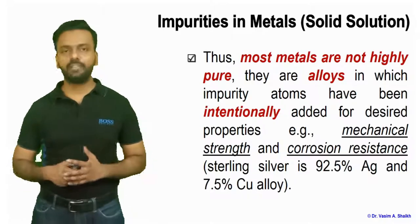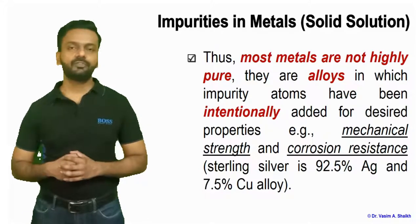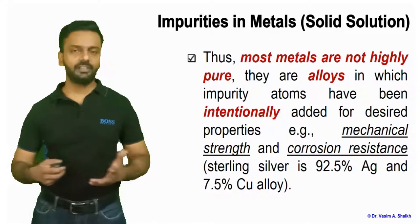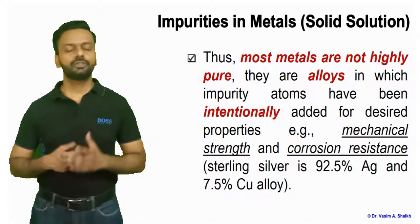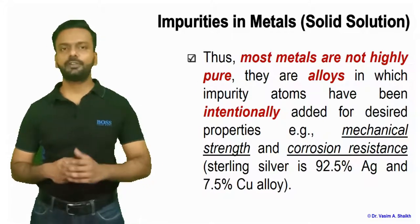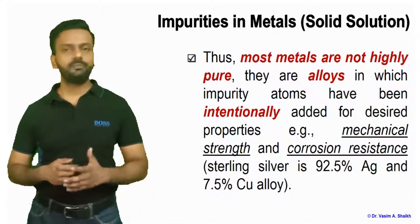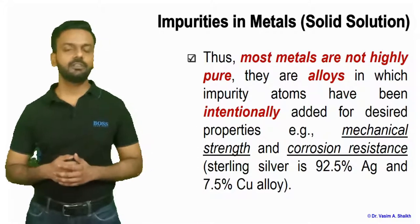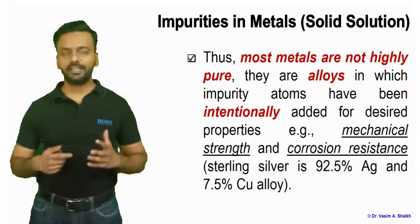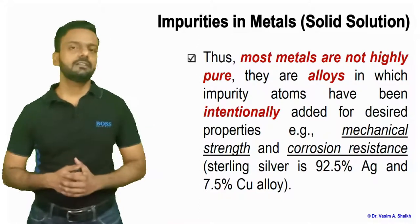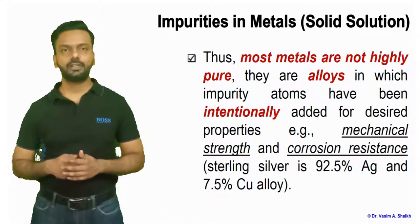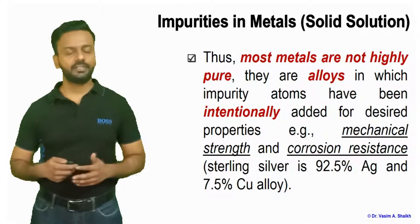Most metals are not highly pure — they are alloys of other materials. For example, if we take pure silver and try to make jewelry, it will not be very strong. So we alloy silver with copper, and that material is called sterling silver. Jewelry made from sterling silver is very strong and corrosion resistant. That is the main advantage of alloying — when we intentionally add a foreign atom, we get better mechanical properties than any pure material.